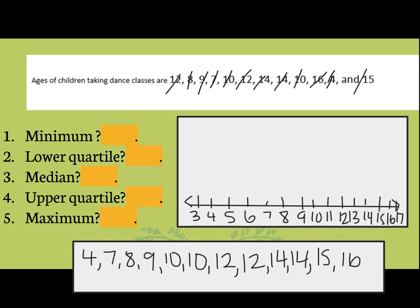Always double check and make sure you have them all. One through twelve at the top, and one through twelve at the bottom as well — twelve numbers confirmed. Remember the five things we need to find: the minimum, the lower quartile, the median, the upper quartile, and the maximum. Our minimum is four and our maximum is 16.